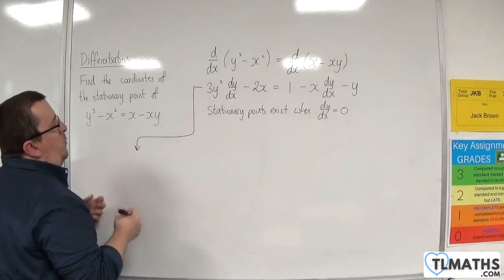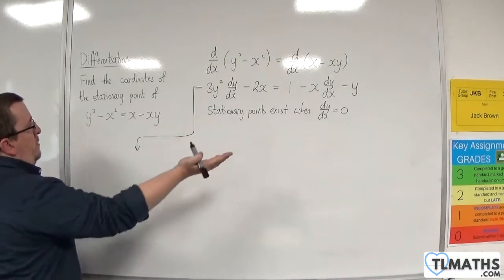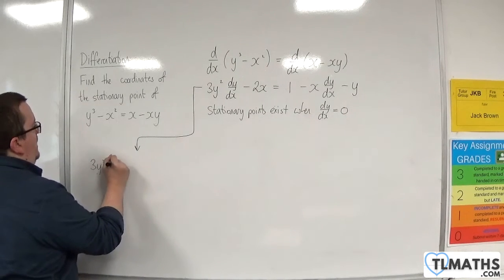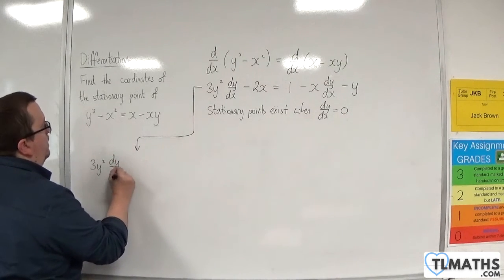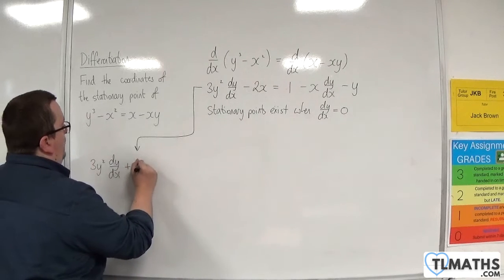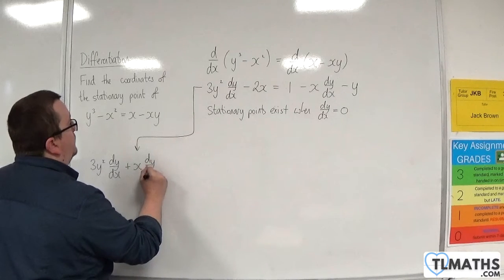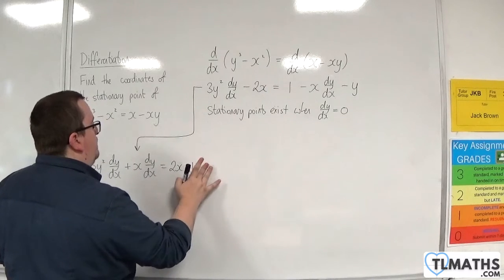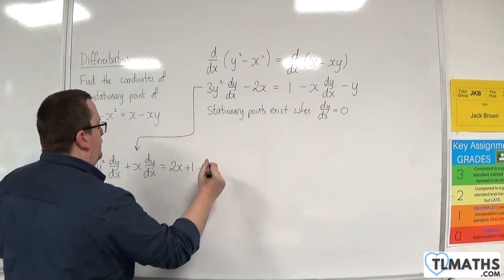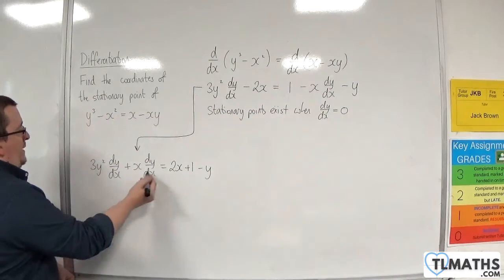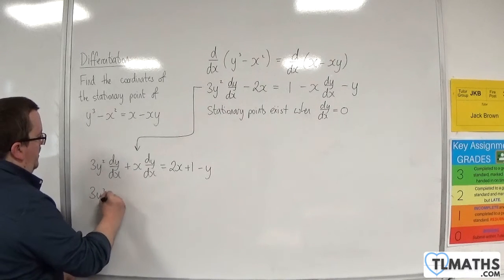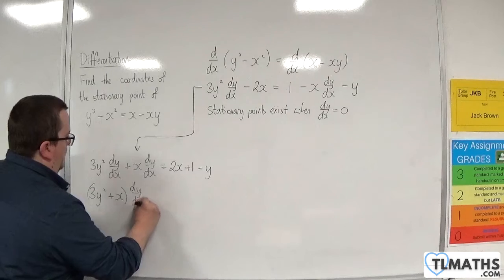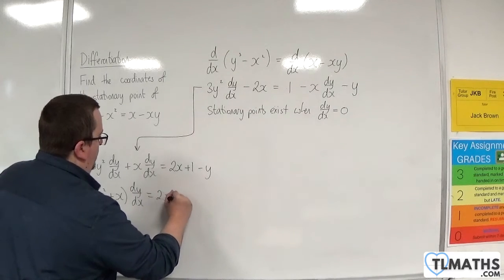So we need to get all the dy/dx's onto one side. So I'll move all of those onto the left-hand side, everything else onto the right-hand side. We'll have 3y² dy/dx + x dy/dx = 2x + 1 - y. Factorize the left-hand side. (3y² + x) dy/dx = 2x + 1 - y.